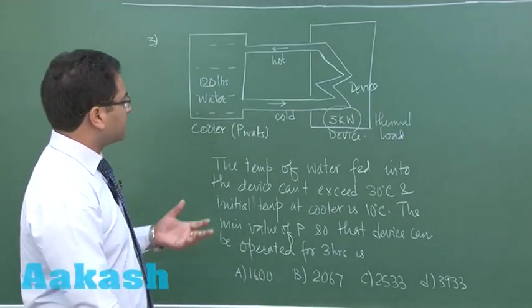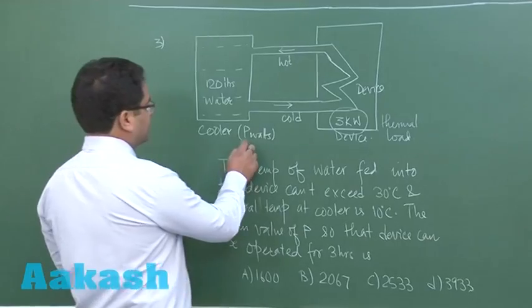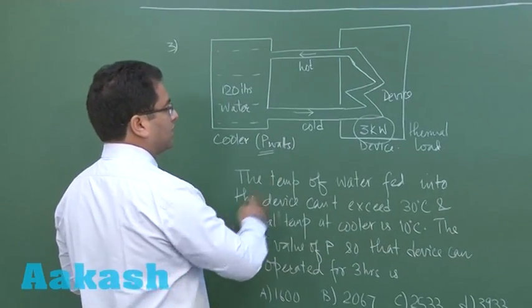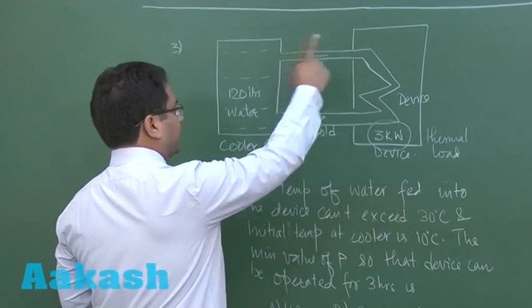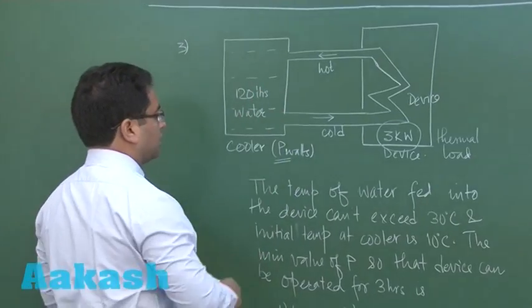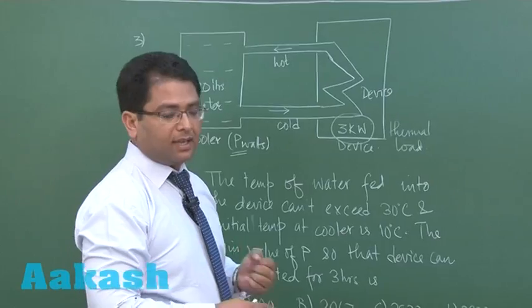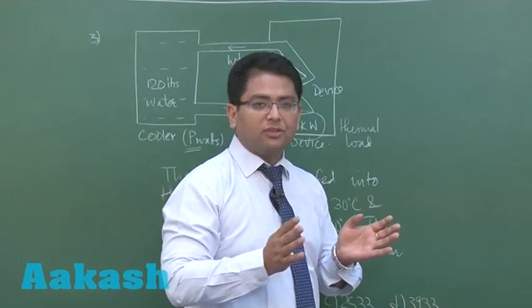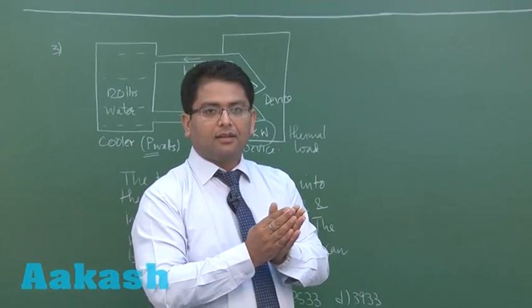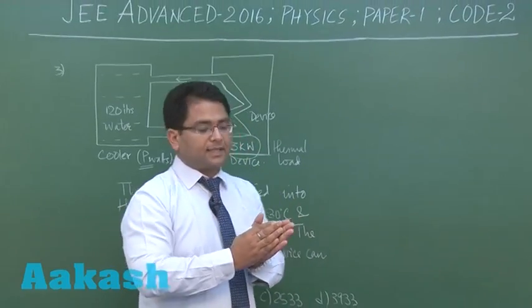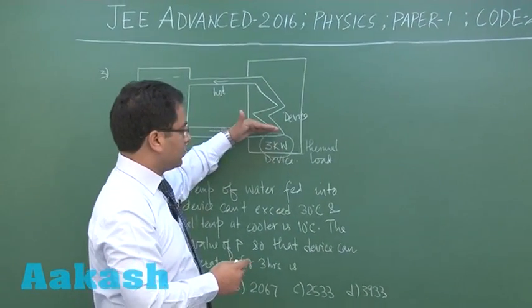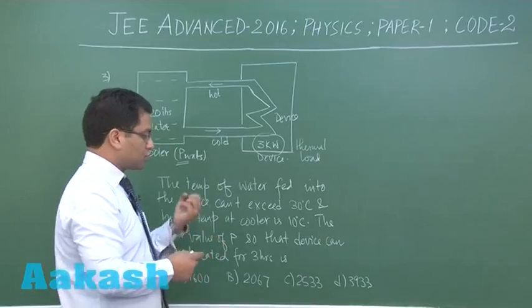With the passage of time, the temperature of the water in the cooler keeps increasing. We need to find that particular value of P so that till three hours, the temperature of the water should not go beyond 30 degrees Celsius.